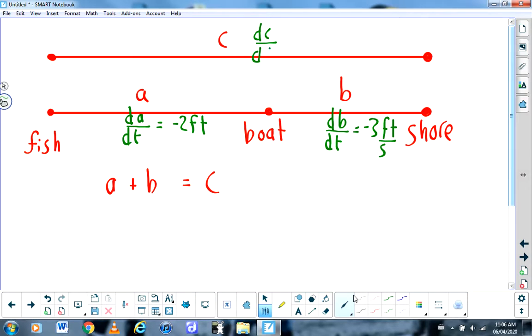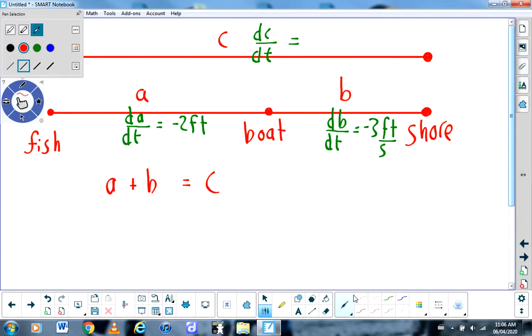I know that many people will take an intuitive approach and you will just say, well, I guess if the fish is getting closer to the boat at two feet per second and the boat is getting closer to the shore at three feet per second, then the fish is getting closer to the shore at five feet per second. But in math, we like to justify things. So the justification here, the mathematics of it,